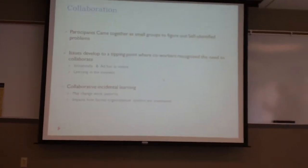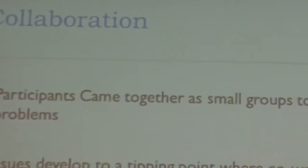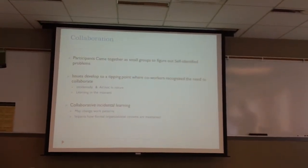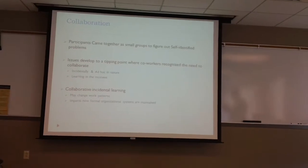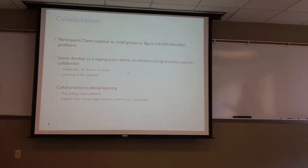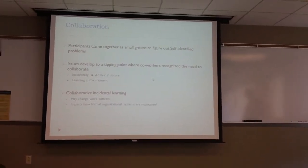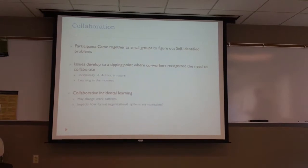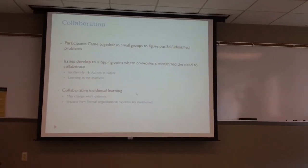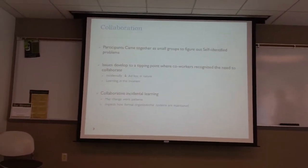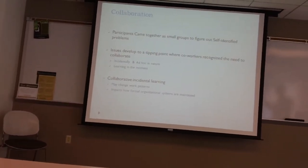The second area was also collaboration. Participants would come together as small groups. They would realize that several people would start asking similar questions, and then on an ad hoc basis, they'd come together: 'Hey, we're all having the same problem, let's figure out how to solve it.' They would be learning in the moment. They would hit this tipping point where, 'Gosh, this is a problem we need to figure it out.' Sometimes because of the collaborative incidental learning, the actual formalized legitimate system would change.